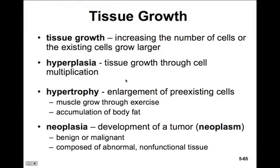In our final section, we move into tissue growth, development, repair, and death. Tissue growth is increasing the number of cells, or the existing cells grow larger. Hyperplasia is tissue growth through cell multiplication, and hypertrophy is the enlargement of pre-existing cells. Muscle cells grow in size through exercise — this is hypertrophy. We won't see muscle cells grow through hyperplasia.